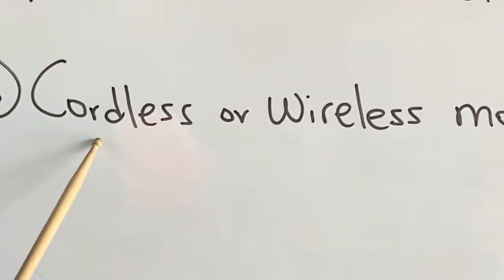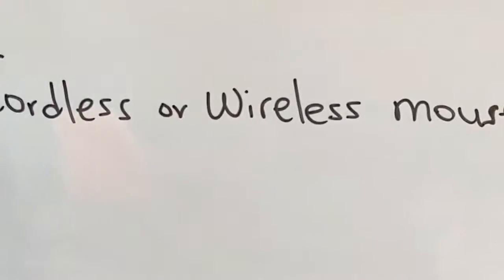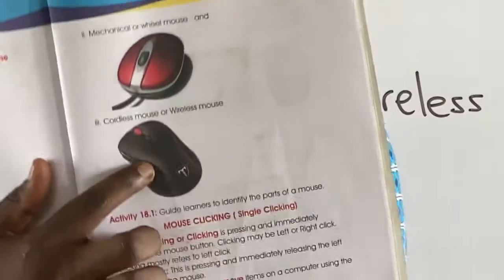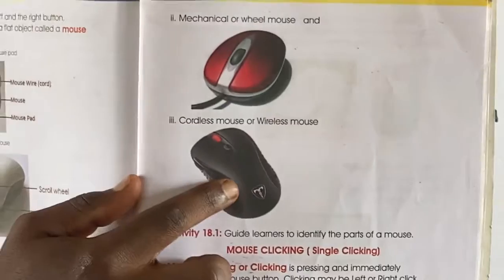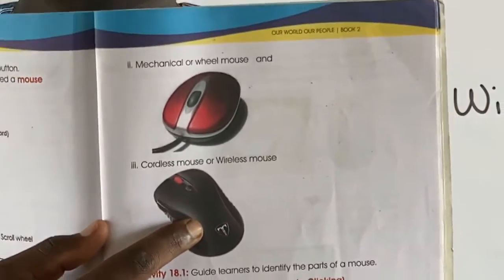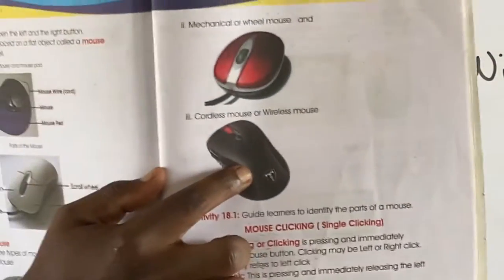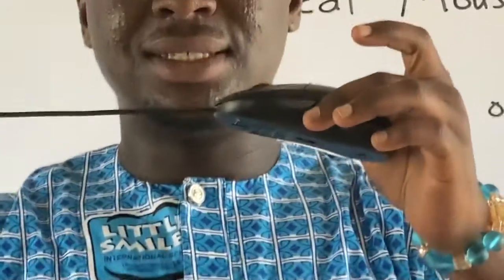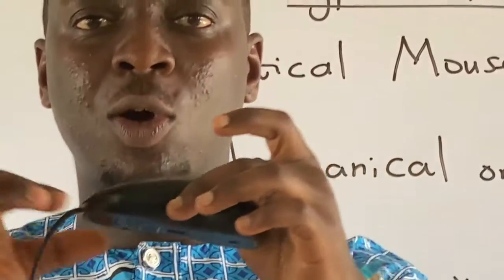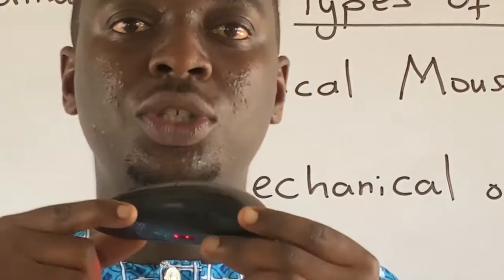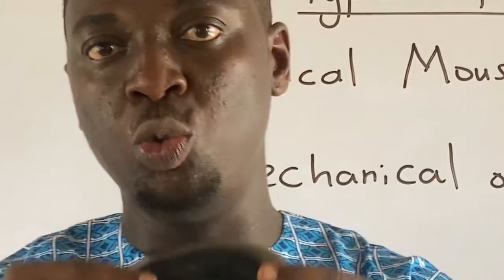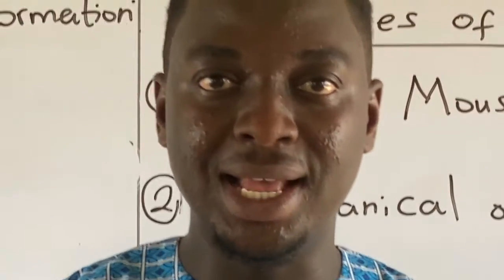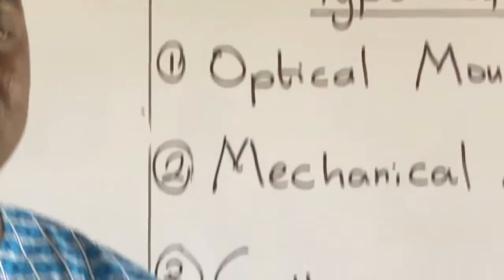The third type is the cordless or wireless mouse. It has no cord and no wheel tube — this part is absent. It uses either infrared or Bluetooth to work. So that is how the cordless or wireless mouse works.